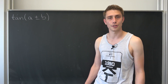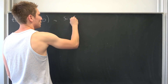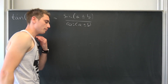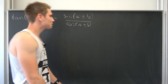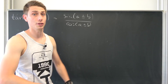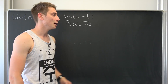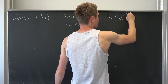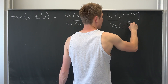First we are going to write the tangent out in a different way. We know from the math snack that the tangent is nothing but the sine of (a ± b) over the cosine of (a ± b). Now, by our definition on the unit circle, the sine is nothing but the imaginary part of the complex exponential function, and the cosine is nothing but the real part. Meaning this is the imaginary part of e^(i(a ± b)) over the real part of e^(i(a ± b)).